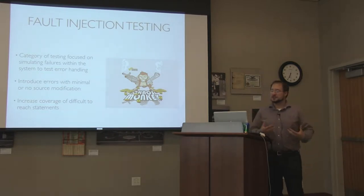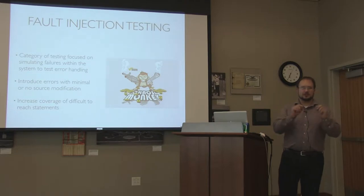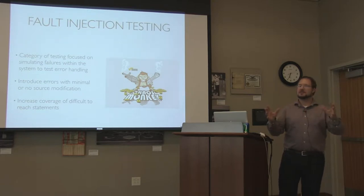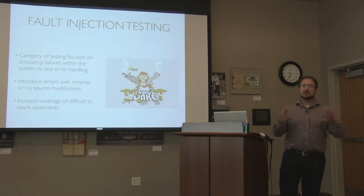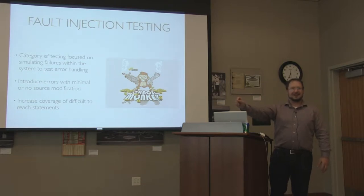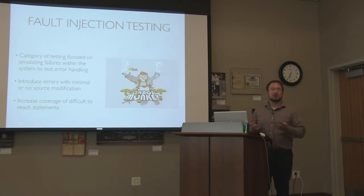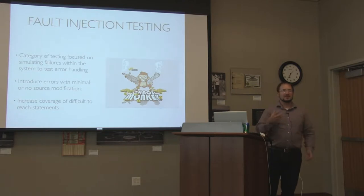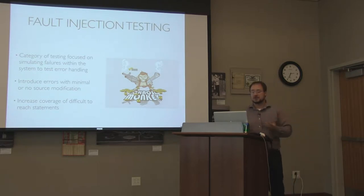For me, fault injection testing is a way to cover all those little nooks and crannies in the coverage report that always seem to get missed - all of those IO exceptions that you never see happen because the network never drops out while you're running your unit tests. Or those exceptions where someone does a catch-and-log with a comment that says 'this should never happen, impossible.' Now we can actually test what the system does when we end up in that catch block.